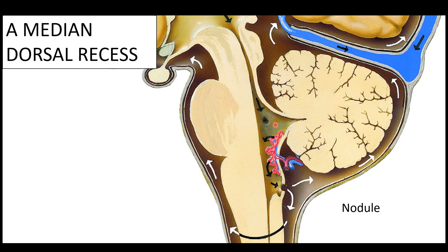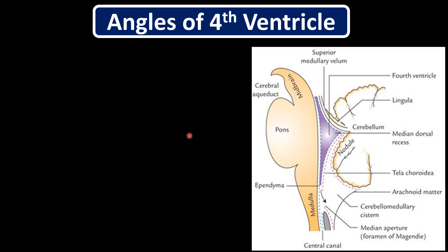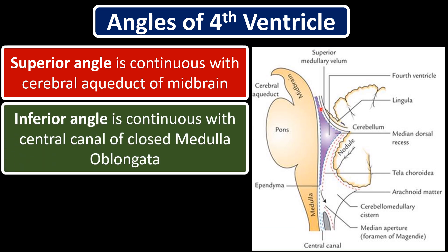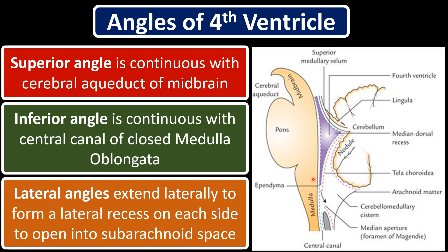The dorsomedian recess is the median part extending into the cerebellum, up to the nodule of the cerebellum. The angles of the fourth ventricle: the superior angle is continuous with the cerebral aqueduct of the midbrain; the inferior angle is continuous with the central canal of the closed medulla oblongata; and the lateral angles extend laterally to form a lateral recess on each side, opening into the subarachnoid space.